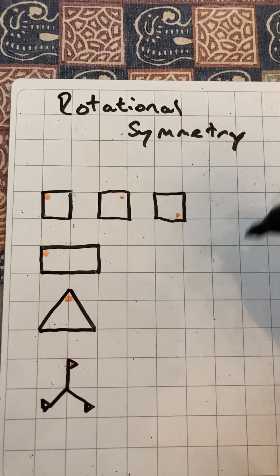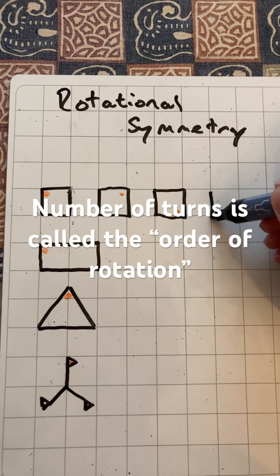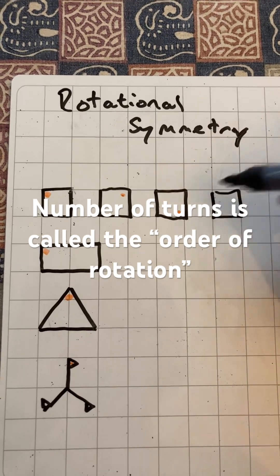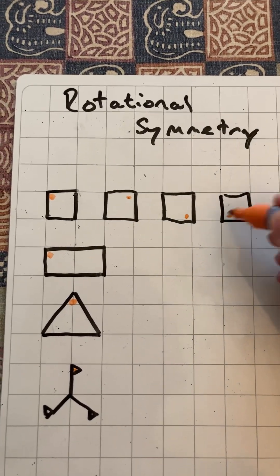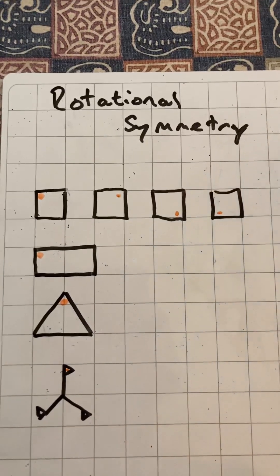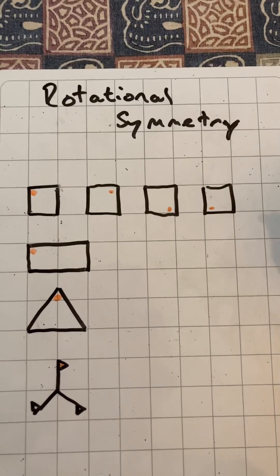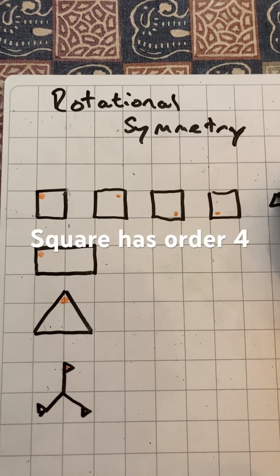That dot's moving down there, and there, and that dot would move there. So it would have order of rotation: four.